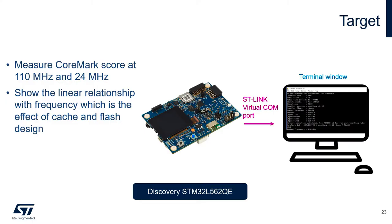Let's have a look at the first hands-on. We will execute CoreMark on the STM32 L5 Discovery Kit at two frequencies: the maximum 110 MHz and then at 24 MHz. The goal is to see that the CoreMark score is linear with frequency, which is thanks to the low number of wait states on the internal flash and the ICache that accelerates code execution at higher frequencies.